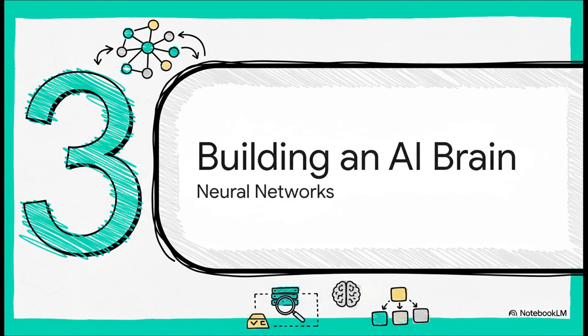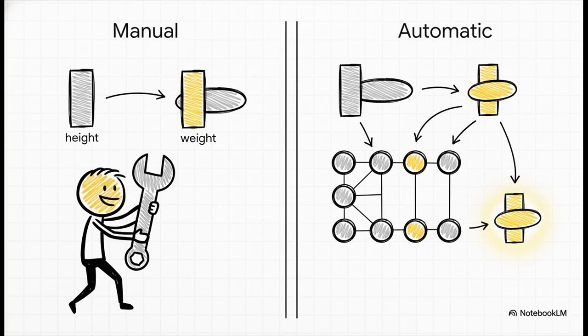It's time to talk about the real powerhouse of modern AI, the thing behind everything from recognizing your face to chatbots: neural networks. So, what's the secret sauce here? What makes neural networks so special? Well, with older algorithms, a person had to create the important variables, what we call features. But neural networks? They do that all by themselves. They figure out which combinations of the raw data are actually important. This is a total game-changer.